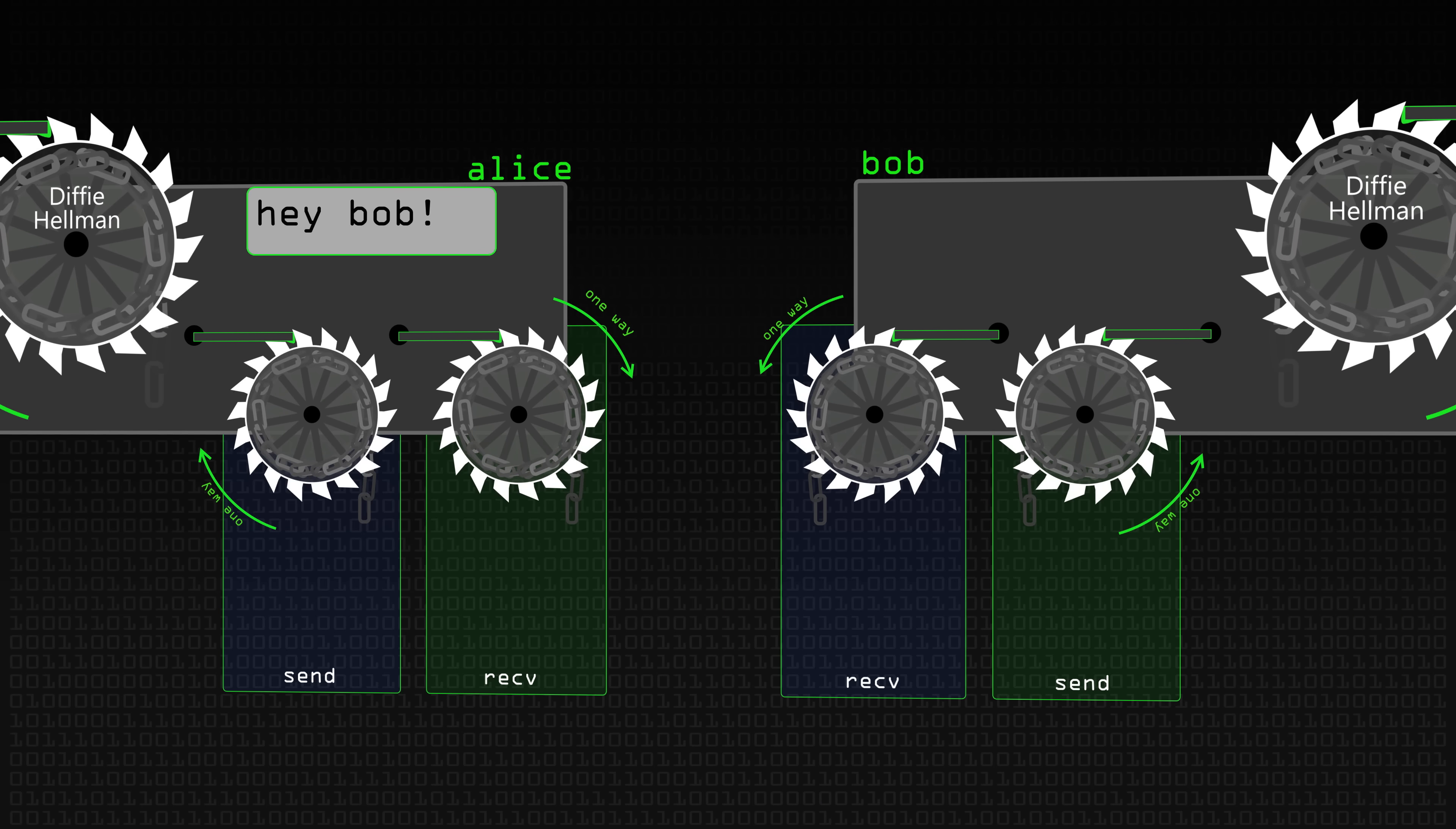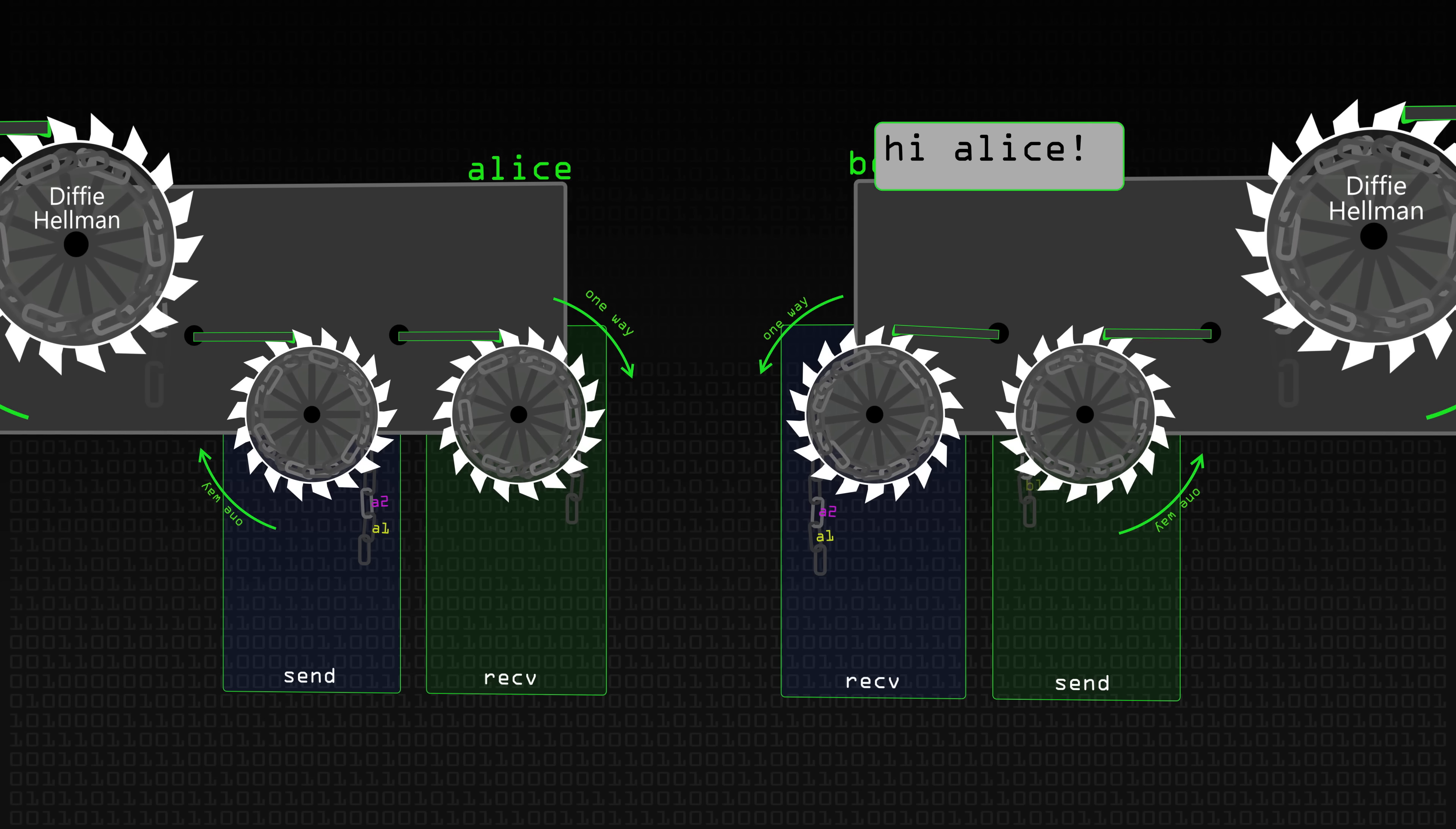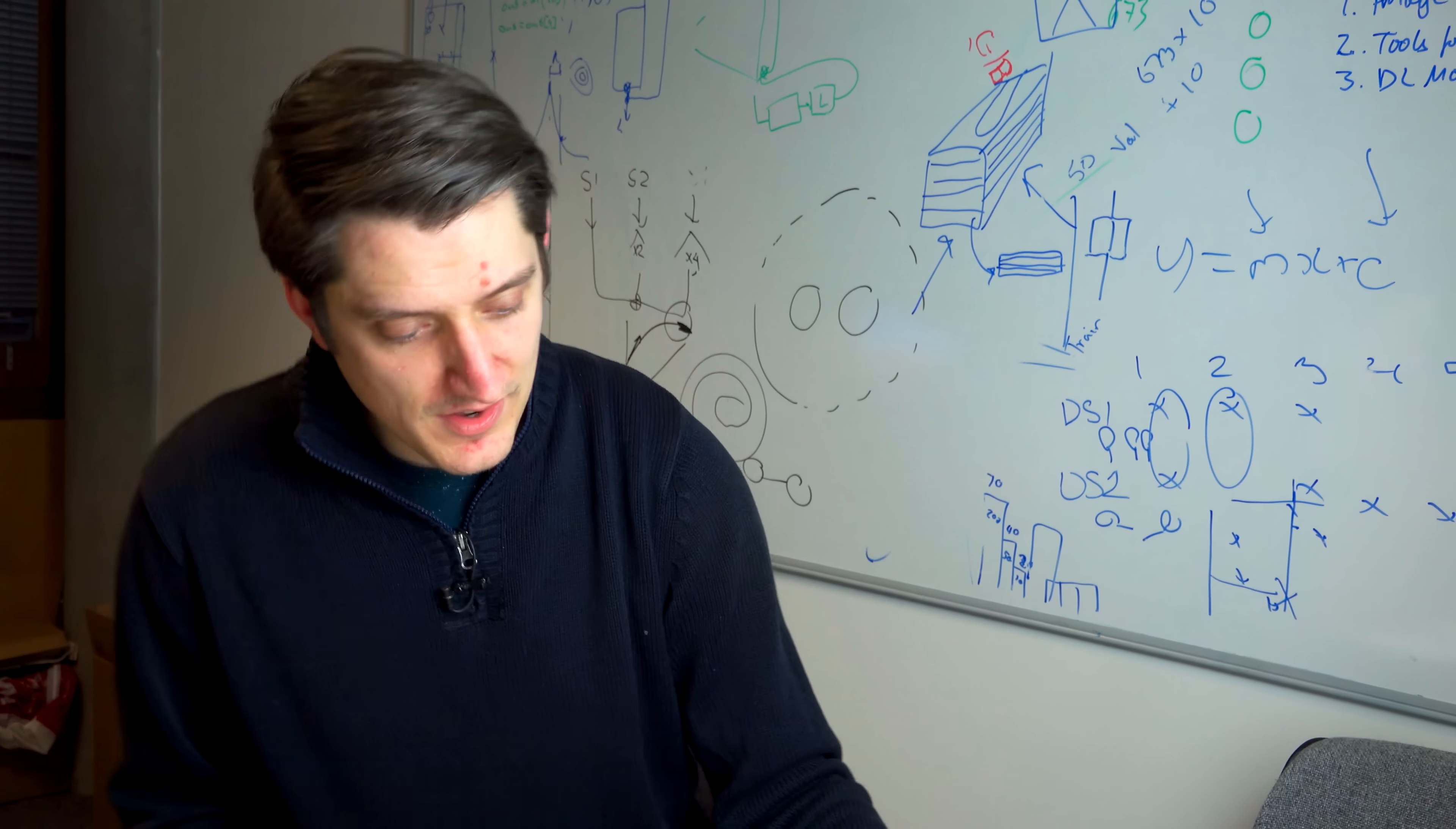Alice maybe wants to send another one, so she's going to take this KDF function again, produce a new key A2, and send that to Bob. He's going to take this receiving function to get A2. Now Bob wants to send a message, so he's going to produce Bob one, B1. Alice gets a message and thinks, well that means I need to calculate whatever the key was to work out what that message was. These chains are just going to theoretically grow and grow, and Alice's sending chain will be in sync with Bob's receiving chain and vice versa. All that has to happen is that the sending and receiving chains for both Alice and Bob have to be in sync and they have to start at the same position. We know that's easy to do because they started using a Diffie-Hellman key exchange.